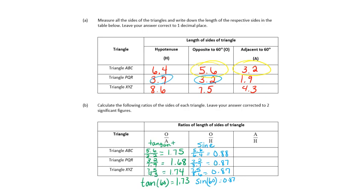Finally, we're going to do adjacent over hypotenuse. In the first triangle it's 3.2 divided by 6.4. The adjacent — remember, adjacent means the side that touches the angle — is 1.9 for the next triangle, so 1.9 over 3.7, and then 4.3 over 8.6. I got 0.5, then 0.51, and 0.5. That's called the cosine, and the cosine of 60 is 0.5.